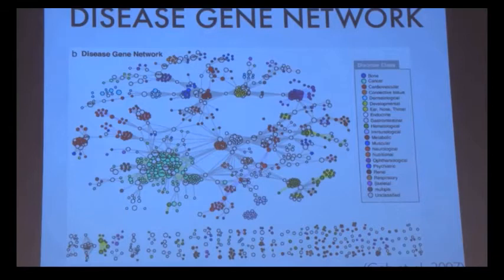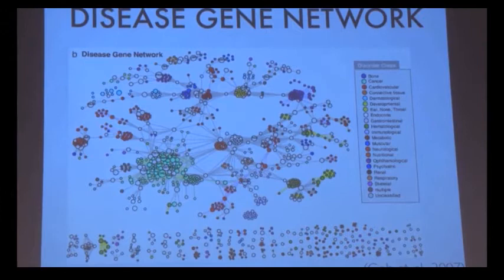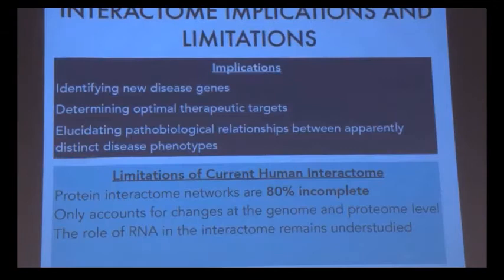It also contains causal links between diseases and genes. Two genes on this network are connected if they are both implicated in the same disease. As you can see, the genes form these highly connected clusters, or disease modules, on the network.